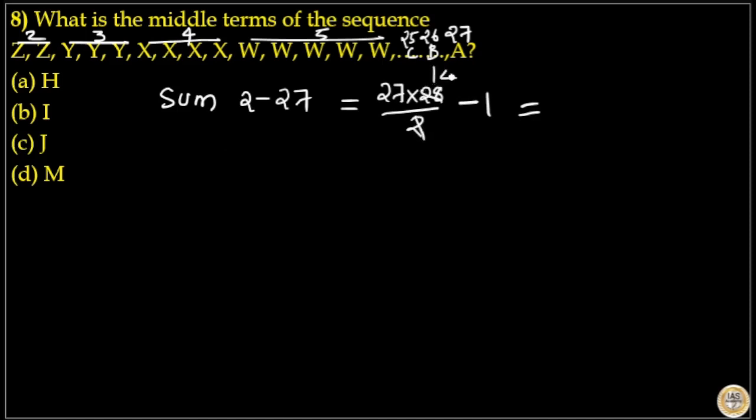2 into 14 is 28. 27 into 10 is 270. 20 into 4 is 80. 7 into 4 is 28. So 270 plus 80 plus 28 equals 378. 378 minus 1 equals 377. So sum is 377 here.